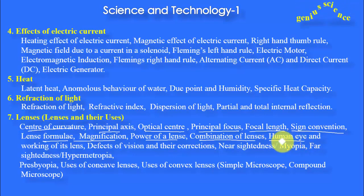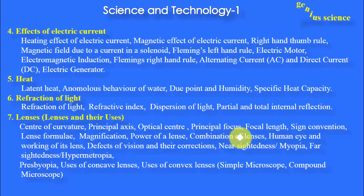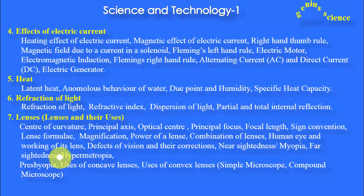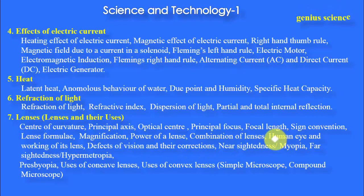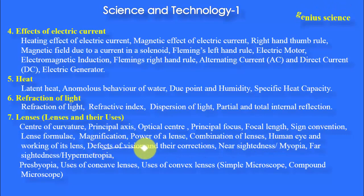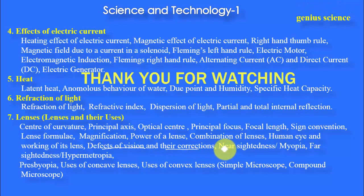Next is the application-based part of the chapter: the human eye. We must learn about the human eye in detail — about light in the chapter and the working of its lens. There is one lens in our eye that works like the physical lenses we study.